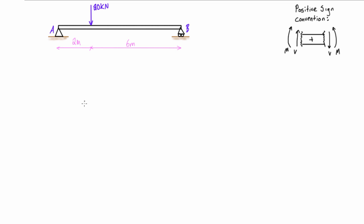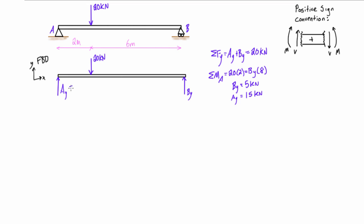So first of all, let's draw the free body diagram and then calculate the reaction forces. So we see that Ay is equal to 15 kilonewtons and By is equal to 5 kilonewtons.